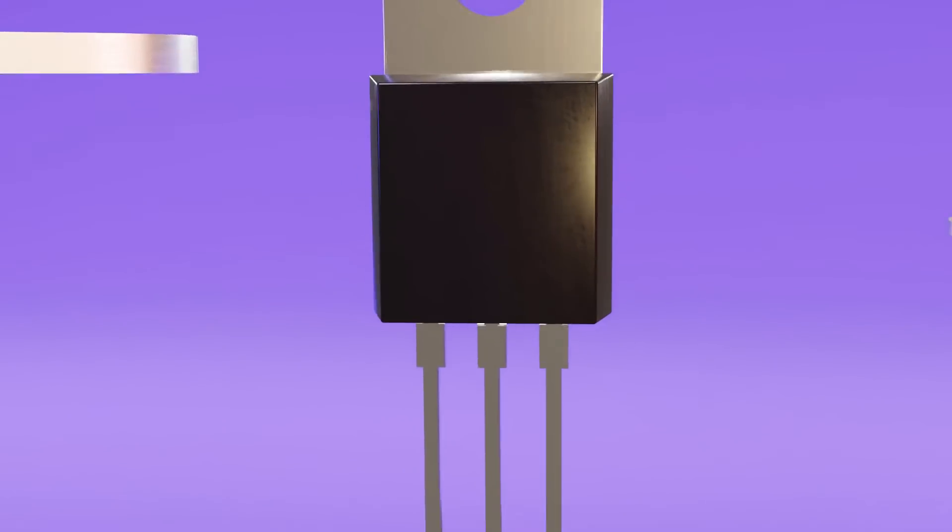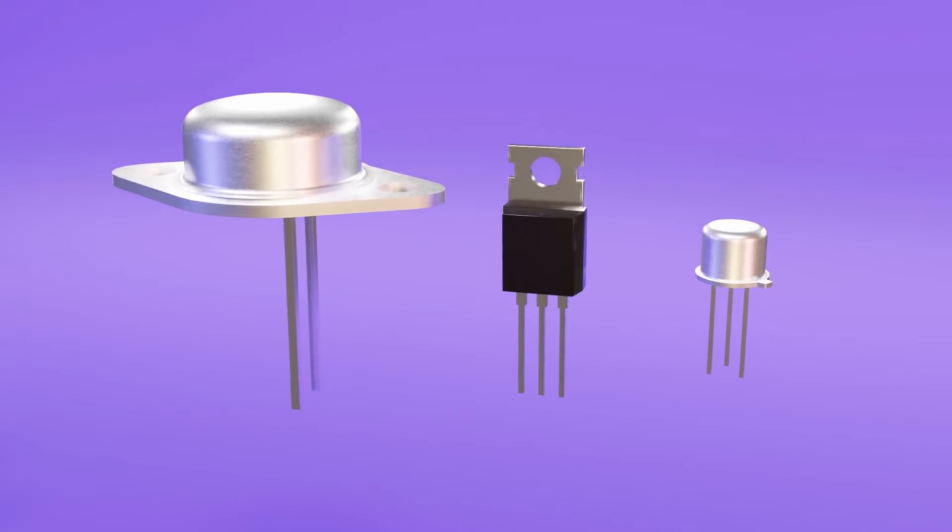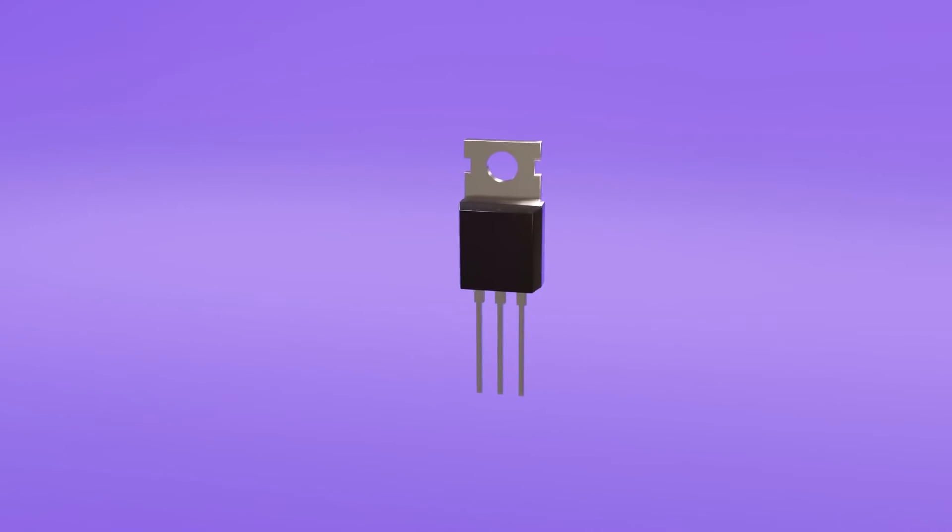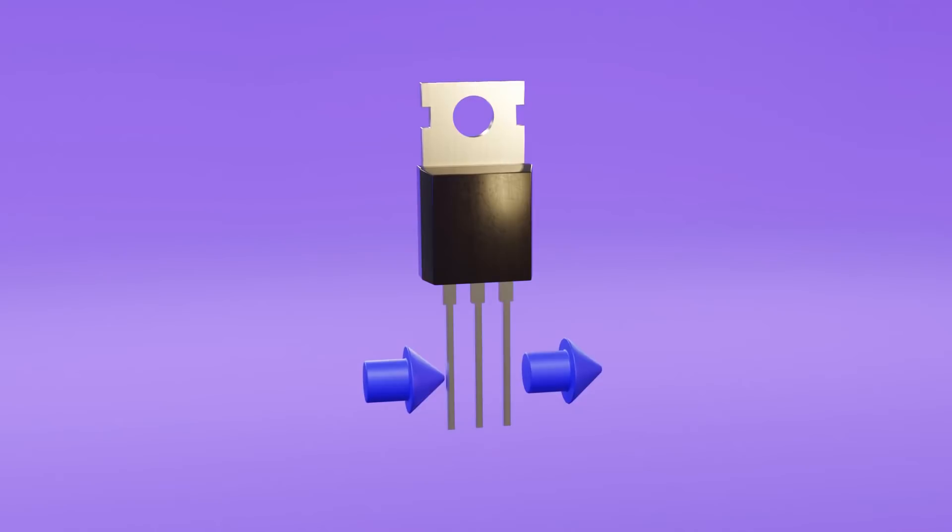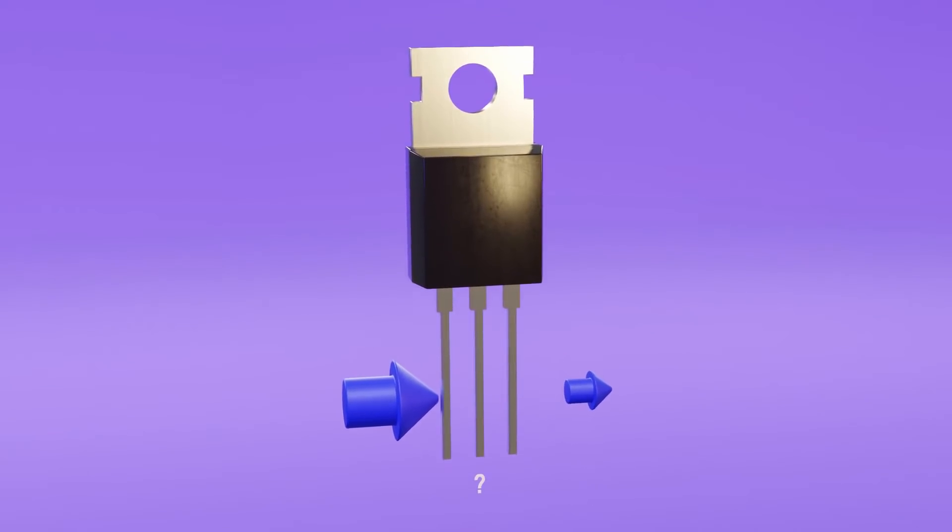Before I start I want to make some clarifications to avoid confusion later. First, if you didn't watch the first video, generally speaking, a transistor is a three terminal electronic component in which between the first and second terminal tries to flow an electric current. While in the third terminal, by modifying some variable, current is controlled acting like a switch or a signal amplifier.